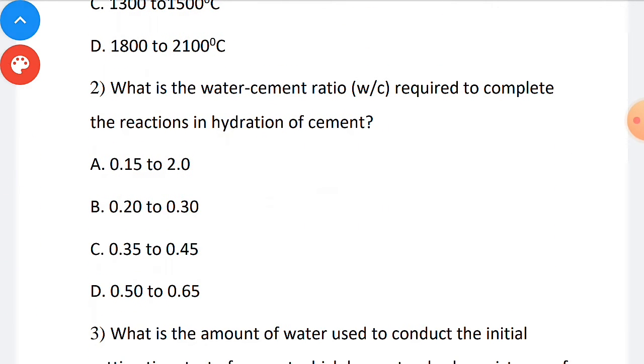Second question: What is the water-cement ratio required to complete the reaction in hydration of cement? 23 percentage of water is required for chemical bonding and 15 percentage of water is required for pore filling. Therefore, the total percentage of water required for hydration of cement is 38 percentage. Therefore, water content range is 35 to 45 percentage. The correct answer for this question is option C: 0.35 to 0.45.